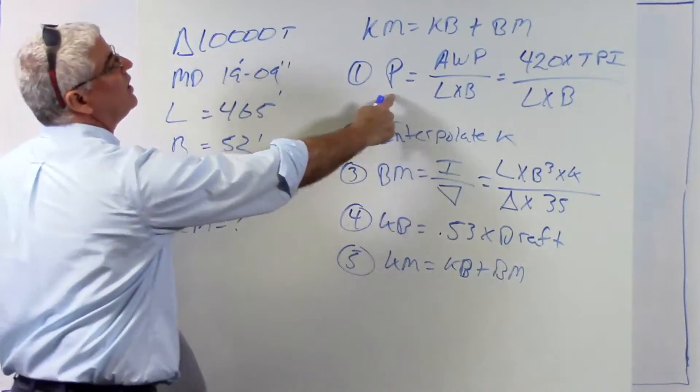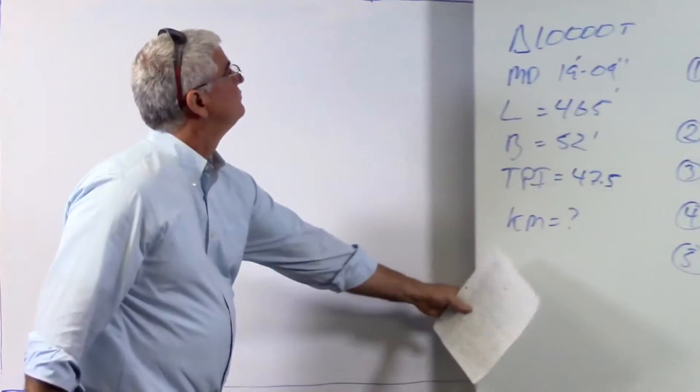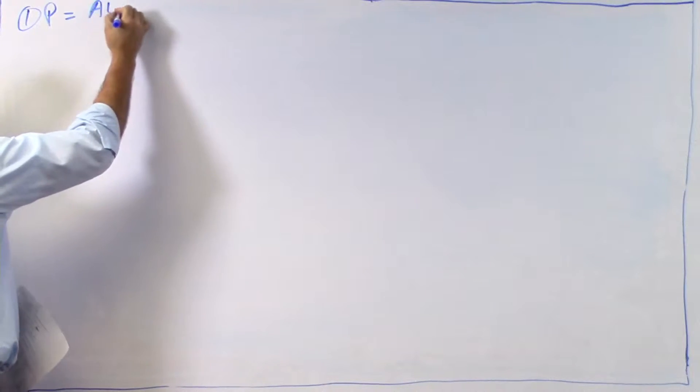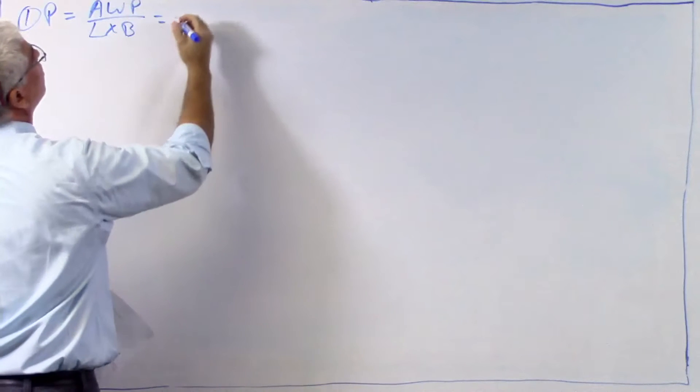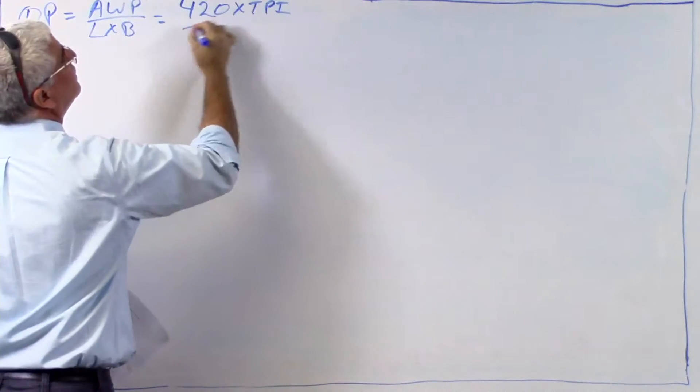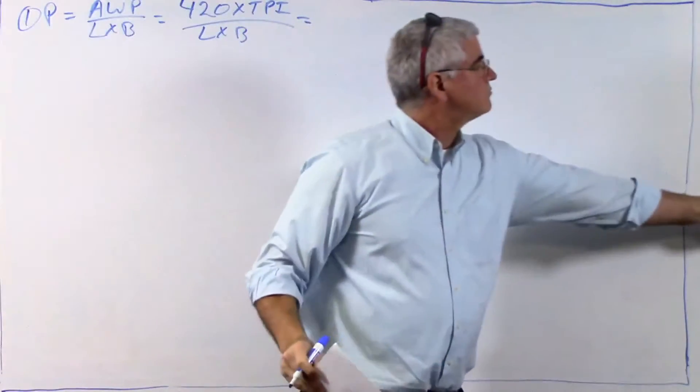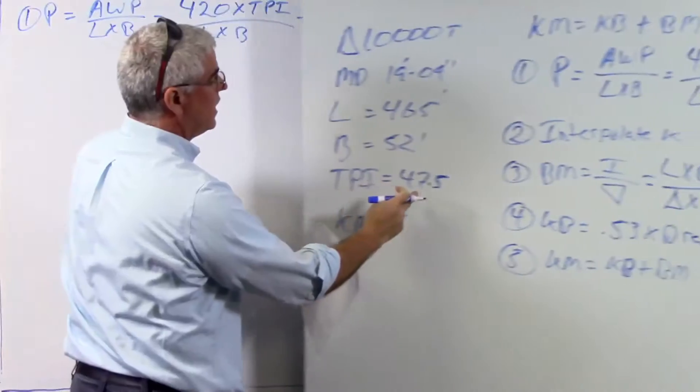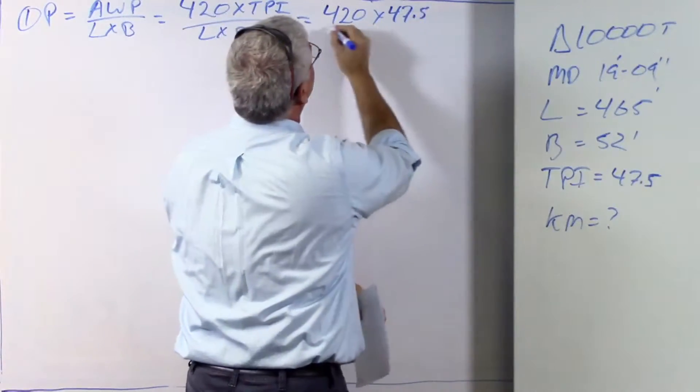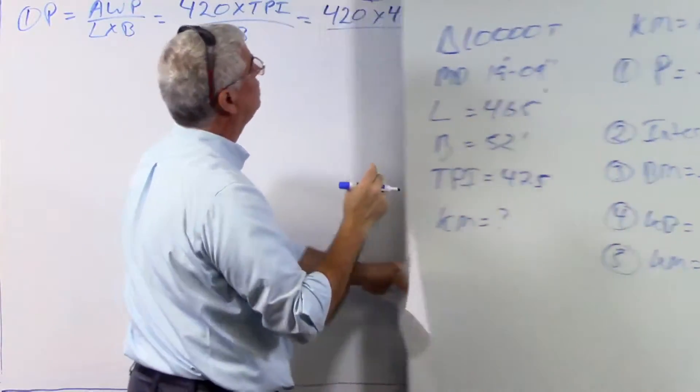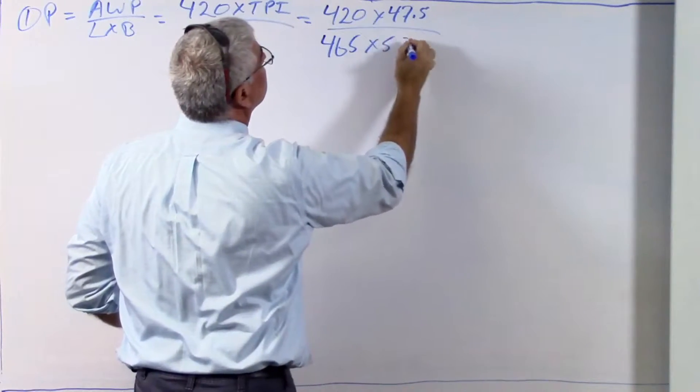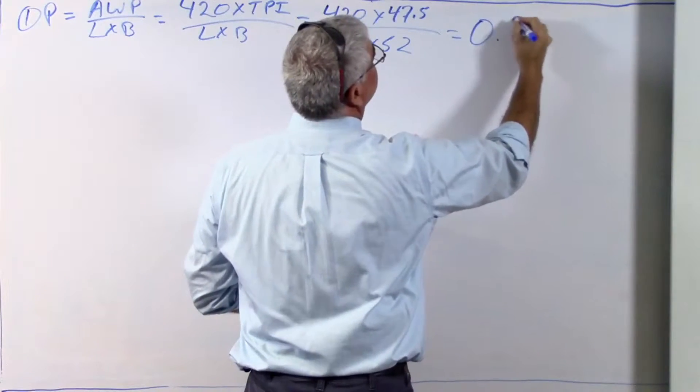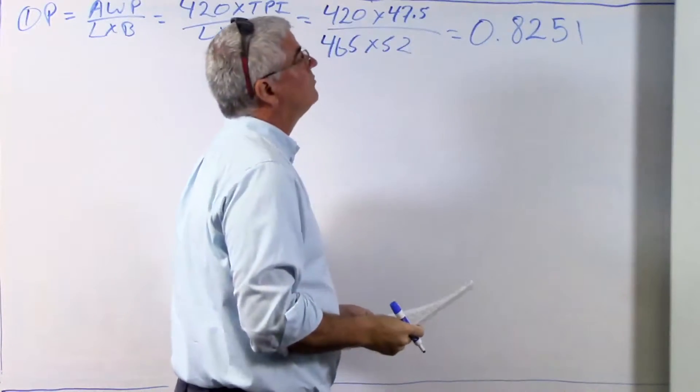So we're going to do all those steps. So the first thing we're going to do is we're going to calculate p using this formula. So let me just slide this out of the way. And we can bring that back if we need it. So 1, p equals area of the water plane divided by length times beam. Well, area of the water plane is going to be calculated by 420 times TPI divided by length times beam. And when I do that, I'm going to get a value for p of 0.8251. Great. So I've done step one.